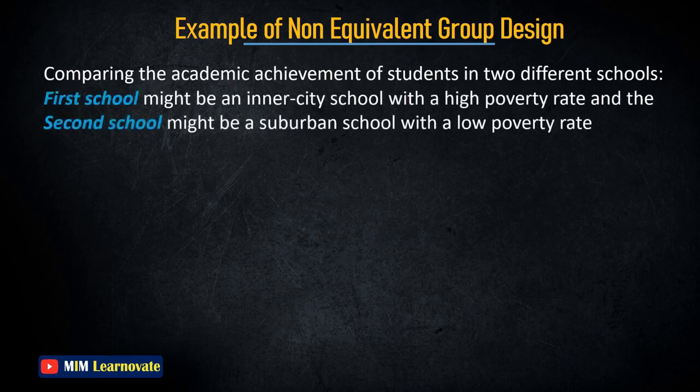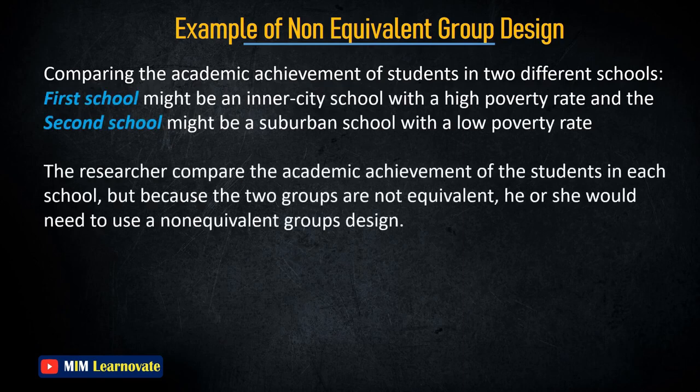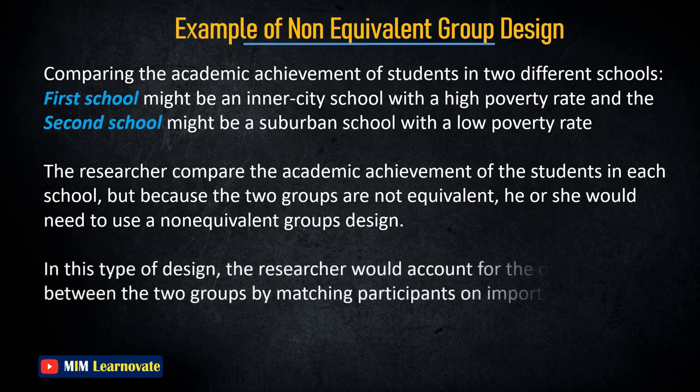For example, the first school might be an inner-city school with a high poverty rate and the second school might be a suburban school with a low poverty rate. Because the two groups are not equivalent, the researcher would need to use a non-equivalent group design, accounting for the differences between the two groups by matching participants on important variables.